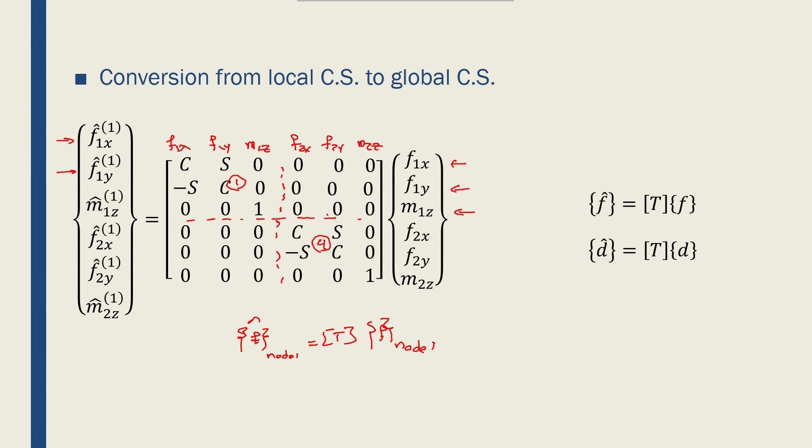And the other portions, quarter 2 and quarter 3 of this matrix, would be filled with zeros. So now I have a 6 by 1 vector of local nodal forces, 6 by 1 vector of global nodal forces, and I have a 6 by 6 transformation matrix for that element.